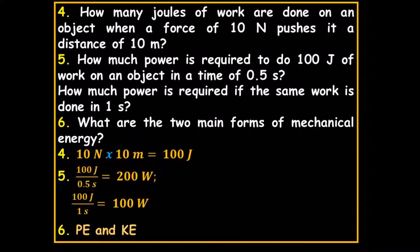How many joules of work are done on an object when a force of 10 newtons pushes it a distance of 10 meters? That's 10 newtons times 10 meters, which equals 100 joules. That's very simple.